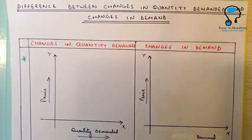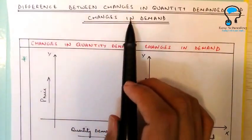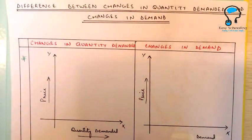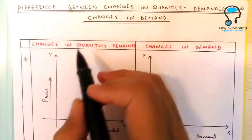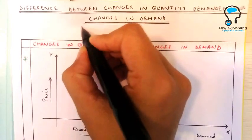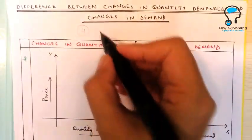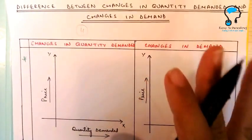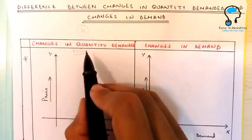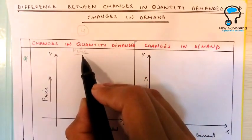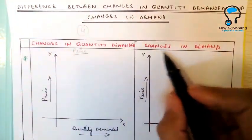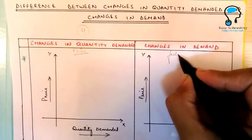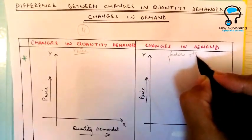In this video we will try to understand the difference between changes in quantity demanded and changes in demand. We have already learned that there are four factors that affect the demand of a commodity: price, income of consumer, price of related products, and fashion, taste and preferences. Changes in quantity demanded are due to change in price of the commodity, and changes in demand occur due to change in factors other than price.